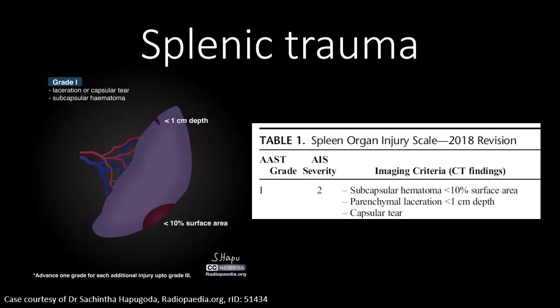Let's look at the AAST splenic organ injury scale, which was revised in 2018. It has grades 1 through 5. A grade 1 injury can be related to a hematoma, laceration, or capsular tear. The hematoma should be less than 10% of the surface area of the spleen, the laceration should be less than 1 cm in depth, and the capsular tear should be a minimal injury to the surface of the spleen.